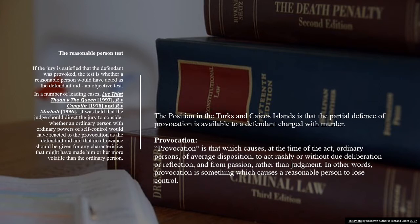In a number of leading cases — the case of Camplin and the case of Morhall — it was held that the judge should direct the jury to consider whether an ordinary person with ordinary powers of self-control would have reacted to the provocation as the defendant did, and that no allowance should be given for any characteristics that might have made him or her more volatile than the ordinary person.